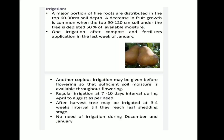Now Irrigation. A major portion of fine roots are distributed in the top 60 to 90 cm soil depth. A decrease in fruit growth is common when the top 90 to 120 cm soil under the tree is depleted to 50% of available moisture. One irrigation after compost and fertilizer application in the last week of January. Another copious irrigation may be given before flowering so that sufficient soil moisture is available throughout flowering. Regular irrigation at 7 to 10 days interval during April to August as per need. After harvest, trees may be irrigated at 3 to 4 weeks interval till they reach leaf shedding stage. No irrigation is needed during December and January.